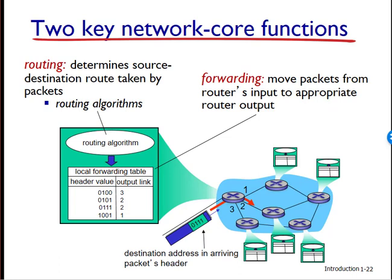A router takes a packet arriving on one of its attached communication links and forwards it onto another one of its attached links. But how does the router determine which port to use? Packet forwarding is done in different ways in different types of networks. On the Internet, every host or end system must have a unique address called the IP address. When a source wants to send a packet to a destination host, the packet includes the destination IP address in the header along with other data.